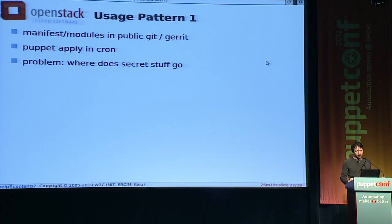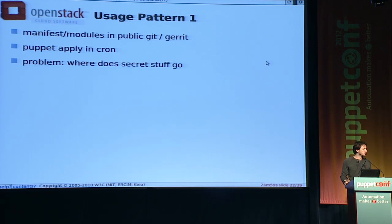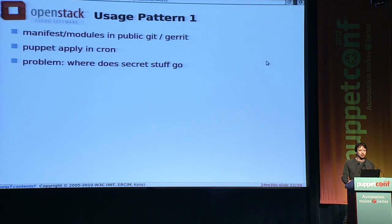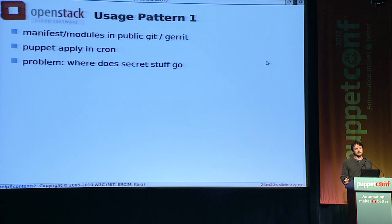The problem with this, even though it's so much better than before, is: where do you stick your secret stuff? I've got SSH keys that one machine needs to use to talk to another machine, and a database password that has to go somewhere. If I've got a public Git repo, I can't very well put all those passwords into it — because then they'd be able to log into the machines, and they call that a security breach. Like what happened to kernel.org, where they were offline for a couple of months.